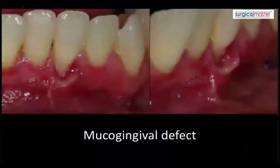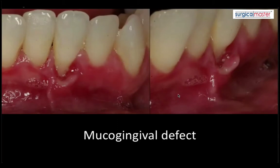The procedure I wanted to talk about is used for mucogingival defects when you have no attaching keratinized tissue. In this case, the patient came in with the tissue basically peeling off — there was some type of frenal or mucosal pull.